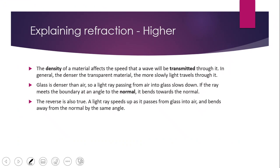The density of a material affects the speed at which a wave is transmitted through it. In general, the denser the transparent material, the more slowly light travels through it. Glass is denser than air, so a light ray passing from air into glass slows down. If the ray meets the boundary at an angle, it bends towards the normal. Conversely, light speeds up as it passes from glass to air and bends away from the normal.